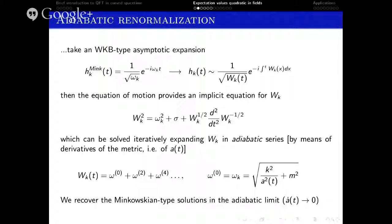We rely on the known solution in Minkowski to take this ansatz for the asymptotic structure of the field modes in a general cosmological background. The question now resides in determining this function W. For that purpose, we introduce it in the equation of motion and solve by iteration. We expand this function in a series in which each term has a definite number of derivatives of the scale factor — the adiabatic order — and we take this as a measure of how adiabatic our function is. To ensure that we recover the Minkowski solutions in the strict adiabatic limit, we impose initial conditions: the zeroth-order contribution must be the Minkowski frequency.